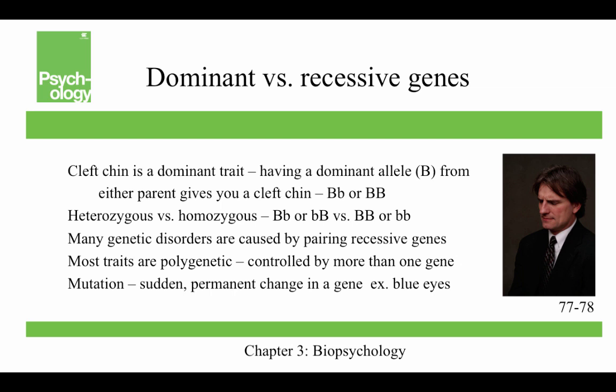Many genetic disorders are caused by pairing recessive genes — for example, sickle cell anemia or PKU. Most traits, though, are polygenic, which means they're controlled by more than one gene.